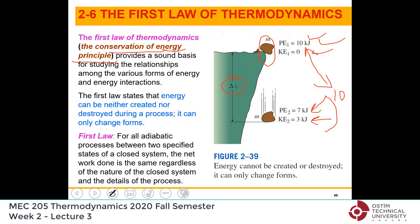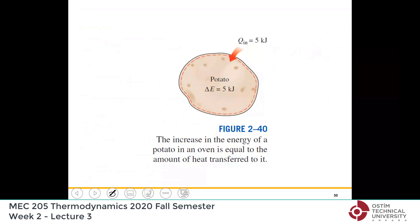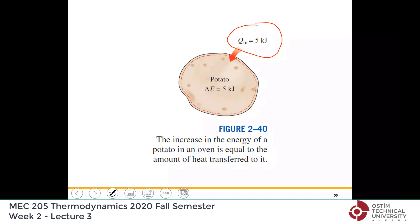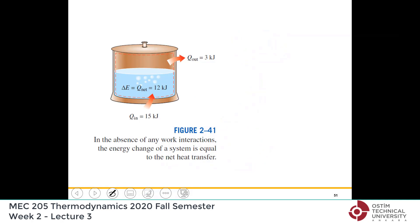Income minus expenses equals the change in the bank account balance. In energy: energy entering minus energy leaving is the change in the amount of energy. For example, if hot air in an oven loses 5 kilojoules, the potato's energy increases by 5 kilojoules — conservation of energy. Or if you transfer 15 kilojoules of heat to a pan and lose 3 kilojoules to outside air, the increase in food energy must be the difference of 12.